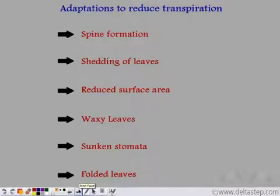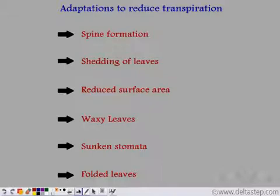So these are the various adaptations: spine formation in xerophytic plants, shedding of leaves in deciduous plants, reduced surface area in evergreen cold-country trees, waxy leaves in equatorial climate plants that have a broad leaf surface, sunken stomata in plants like Nerium, and finally folded leaves in plants like Hindu rope — all of these are adaptations by which plants reduce the rate of transpiration.